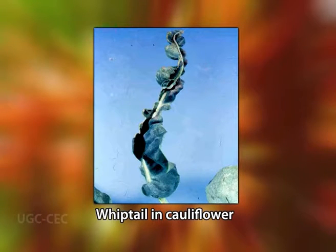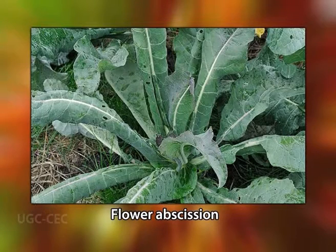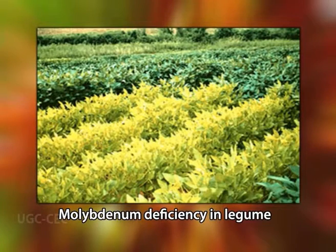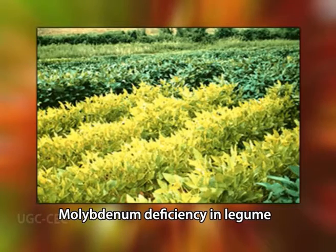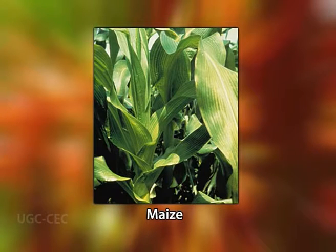In some plants, for example cauliflower and broccoli, the leaves do not become necrotic but instead appear twisted and subsequently die — a disease named whiptail. Flower formation is prevented or flowers abscise prematurely. In plants such as legumes, which depend on nitrogen fixation, molybdenum deficiency gives rise to symptoms of nitrogen deficiency. Like many micronutrients, molybdenum deficiency is highly species-dependent, particularly widespread in legumes, members of family Brassicaceae, and maize.